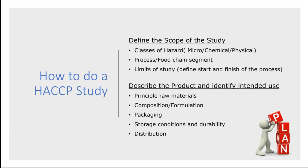So let's talk about how we do a HACCP study. First, we have to define the scope of what the study is going to be. What are the classes of hazards we're going to look at? Microbiological, chemical, physical, possibly allergens as well. What about the process and food chain segments — are we going to look all the way back through our supply chain, raw material suppliers, packaging, and labeling? We also have to think about the limits of the study — where are we starting and where are we finishing?